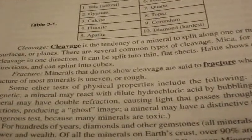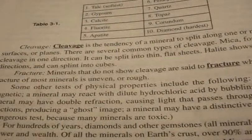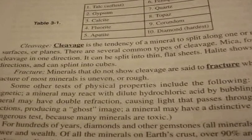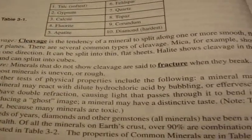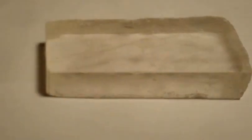One useful feature to identify a mineral is knowing if it has cleavage. Cleavage is the tendency of a mineral to split along one or more smooth flat surfaces or planes. Here is a mineral that has cleavage — notice it has flat smooth surfaces, and the sides are parallel to each other. This is a perfect example of cleavage.